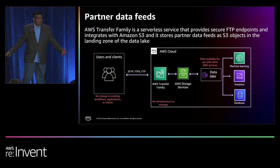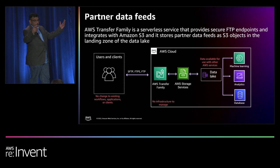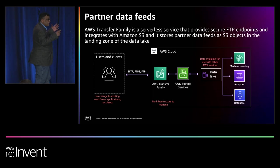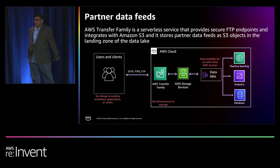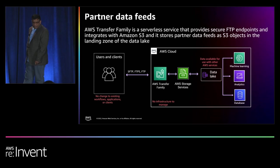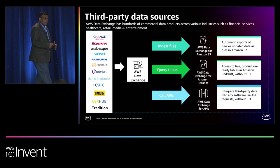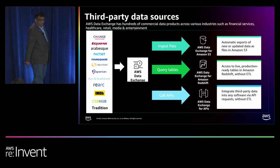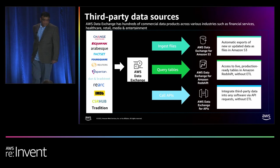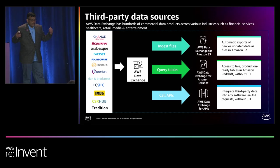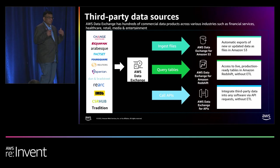Partner data feeds: organizations are exchanging data files with partners. Very often these partner data feeds contain valuable data, and typically these are exchanged through FTP. You can use AWS SFTP to bring partner data feeds into your storage layer. Third-party data sources: many organizations are looking for ways to improve their end-user experience by combining their internal data with third-party data sources like Market Insights, Historical data feeds, and Consumer data feeds. You can ingest third-party data feeds into Amazon S3 data lake landing zone by subscribing to third-party data products using AWS Data Exchange.